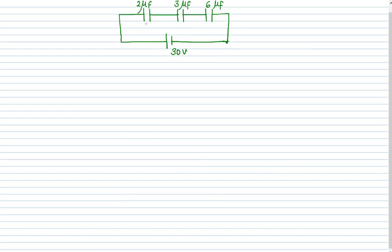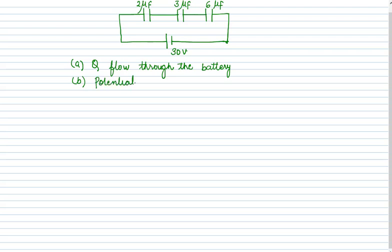In the fourth numerical, we are given three capacitors C1 = 2 microfarad, C2 = 3 microfarad, and C3 = 6 microfarad connected in series with a voltage source of 30 volts. We need to calculate: the charge through the battery, the potential energy in the 3 microfarad capacitor, and the total potential energy.